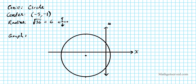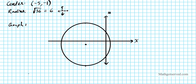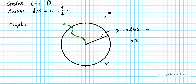Now label the graph — we need two things: the center and the radius. From the center to the extremity is the radius. The radius equals 6 units. The center is at (-5, -1). There goes your graph.